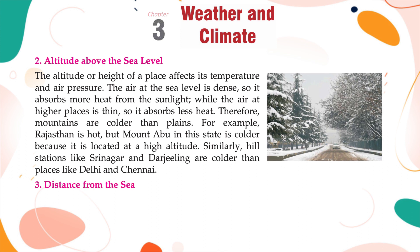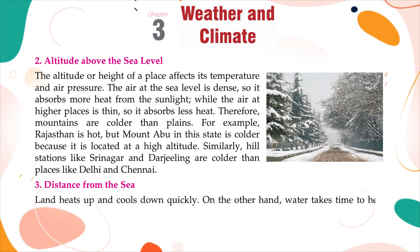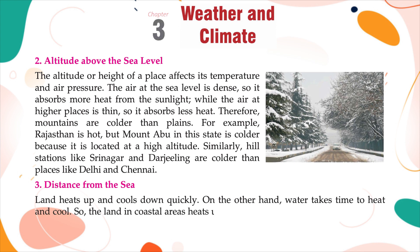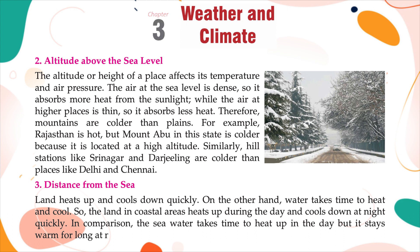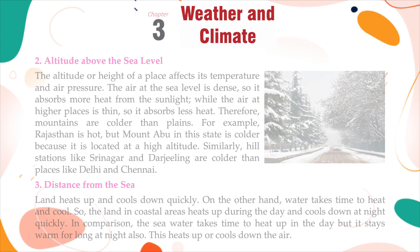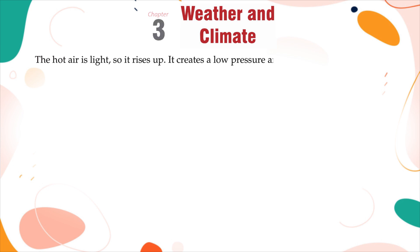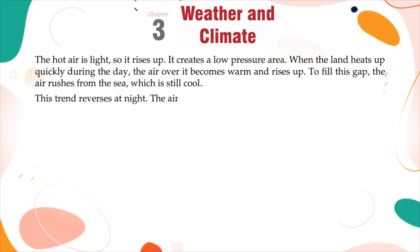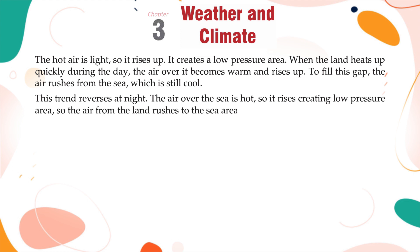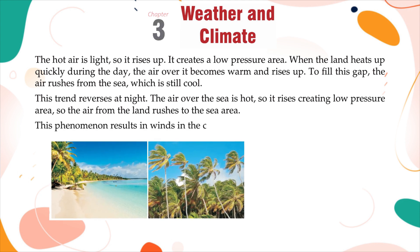Distance from the sea. Land heats up and cools down quickly. On the other hand, water takes time to heat and cool. So, land and coastal areas heat up during the day and cool down at night quickly. In comparison, seawater takes time to heat up in the day, but it stays warm for long at night also. This heats up or cools down the air. The hot air is light, so it rises up, creating a low-pressure area. When the land heats up quickly during the day, the air over it becomes warm and rises up. To fill this gap, the air rushes from the sea, which is still cool. This trend reverses at night — the air over the sea is hot, so it rises, creating a low-pressure area, and the air from the land rushes to the sea area. This phenomenon results in winds in the coastal areas.